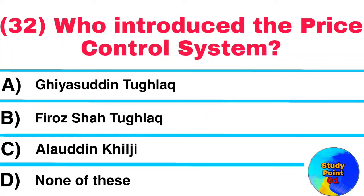Question No. 32. Who introduced the price control system? Answer: Alauddin Khilji.